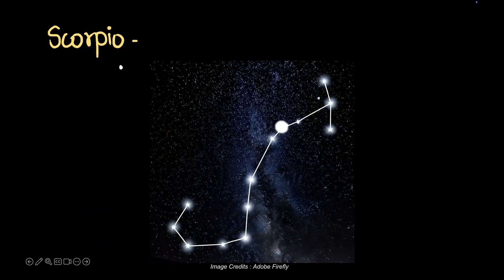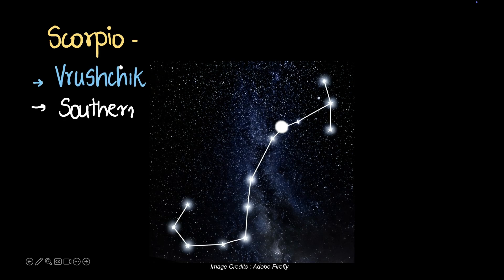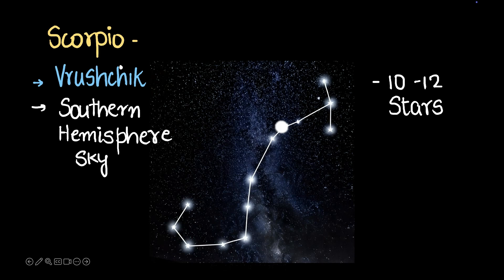Okay, the next one is called Scorpio. This looks like a scorpion if you have a good imagination. In India it's called Vrishik and it's seen more in the southern hemisphere sky, but we do get to see it for a short period in the northern hemisphere as well. This one has 10 to 12 stars and there's one very bright star. It's called Antares in the west and in India it's called Jaeshta.